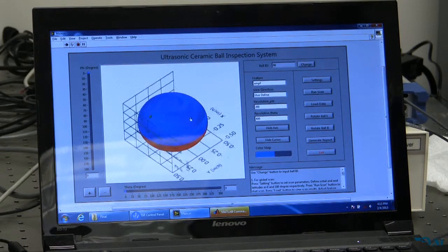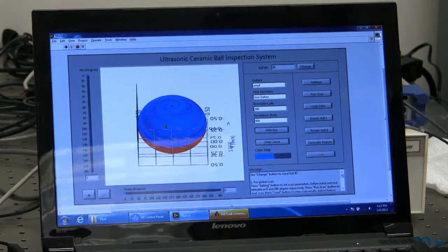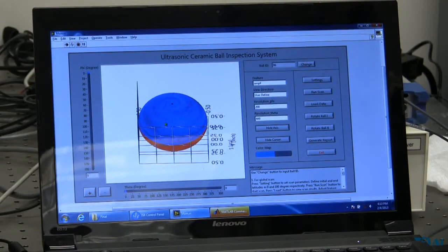Users can drag the 3D image to adjust the view direction. Crack is highlighted with a red colored area. Users can adjust display features, view direction,